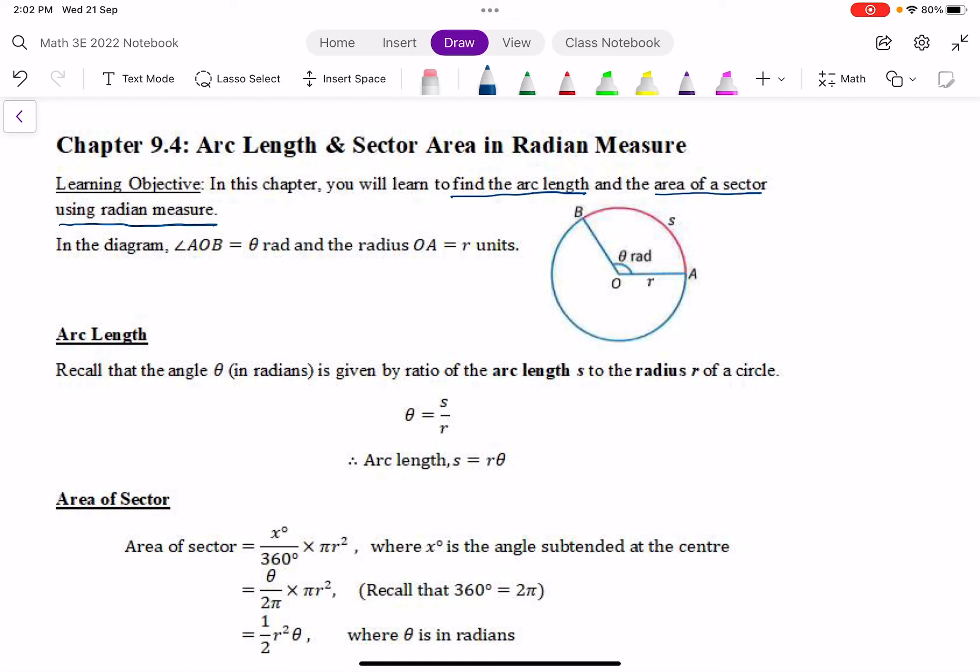Let's look at the diagram. Just to recap, what is arc length? The arc length is the red part here. This red colored part is called the arc, and S is the arc length, which means how long is the arc.